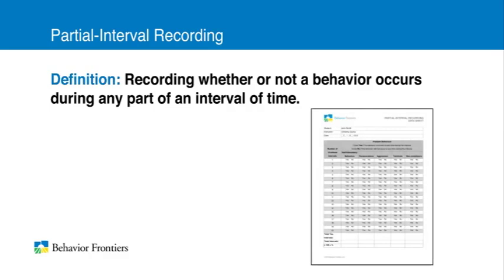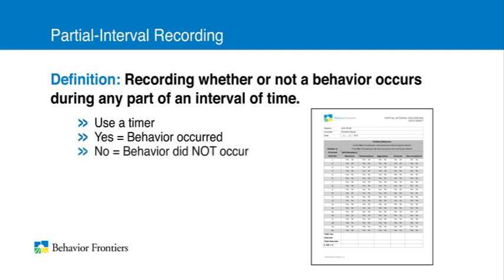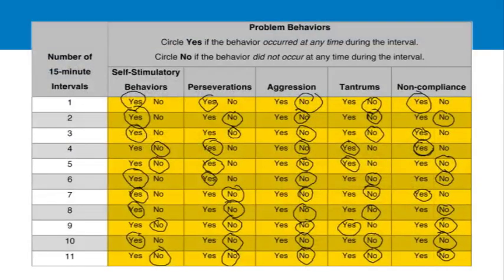For this type of data collection, you should set a timer for the specified interval. When the timer rings, you record a yes if the behavior occurred at any time during the interval, or a no if the behavior did not occur at any time during the interval, as you see in this sample data sheet.